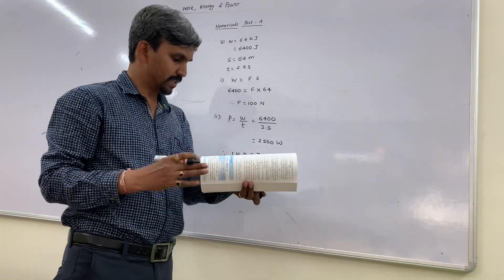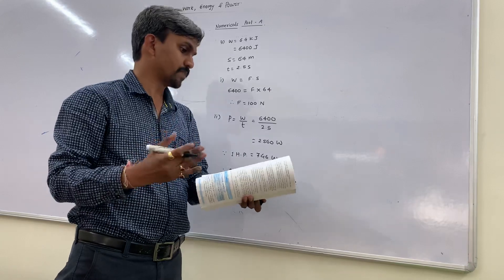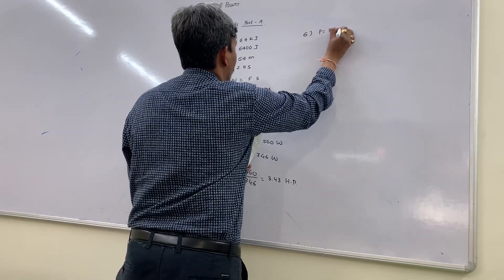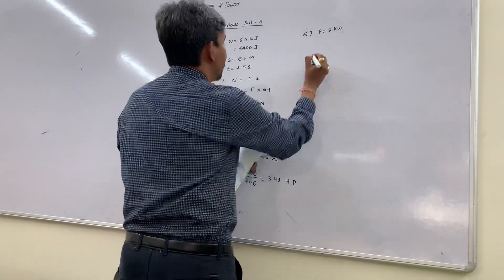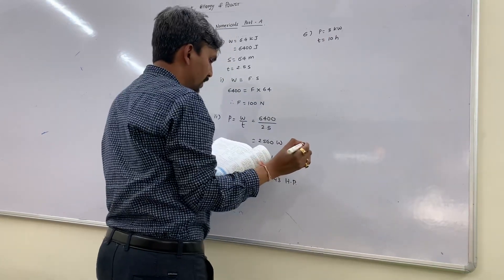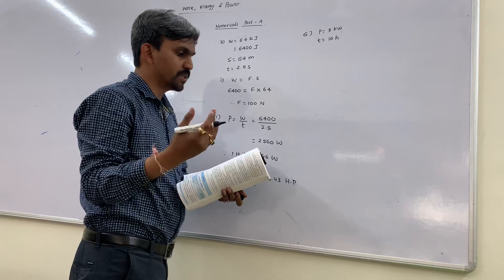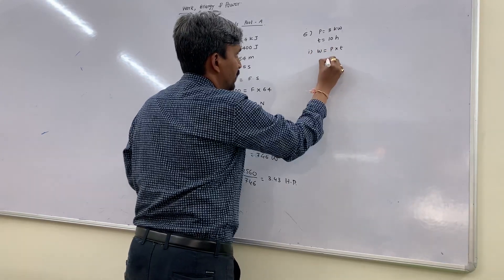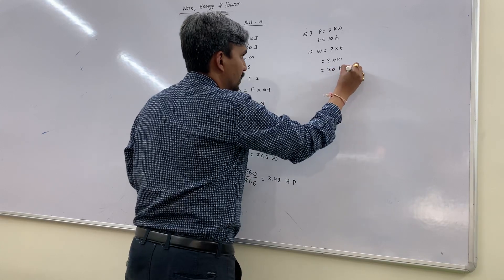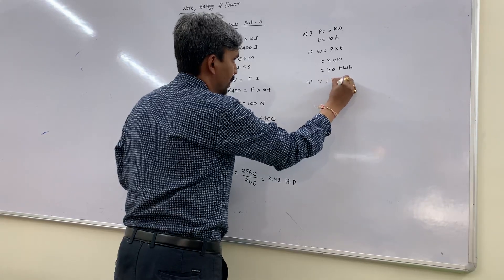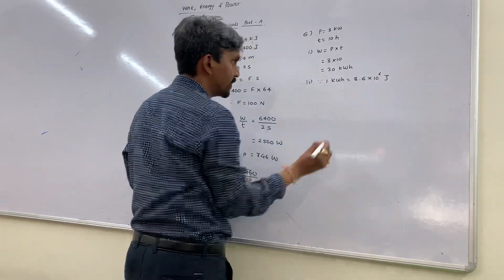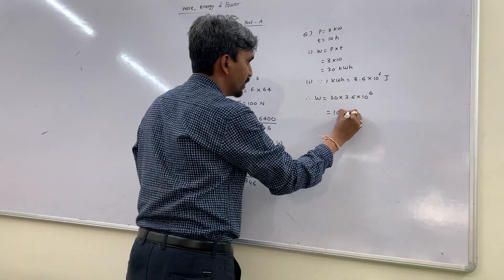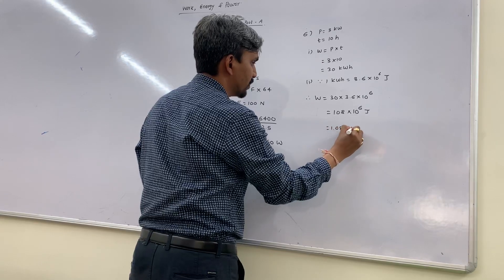The fourth and fifth numericals are similar, so I am skipping them. Sixth numerical: power is given as 3 kilowatts, time is 10 hours. How much energy does it consume in kilowatt-hours and in Joules? W = power × time = 3 × 10 = 30 kilowatt-hours. Since 1 kilowatt-hour = 3.6 × 10⁶ Joules, W = 30 × 3.6 × 10⁶ = 108 × 10⁶ = 1.08 × 10⁸ Joules.